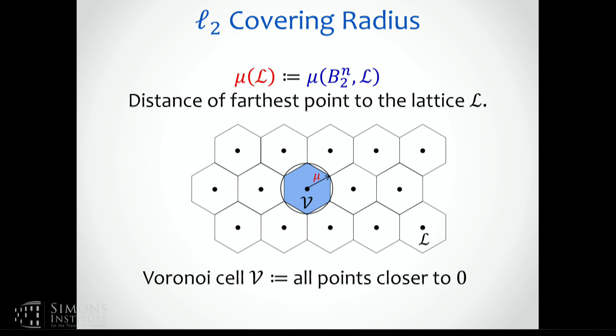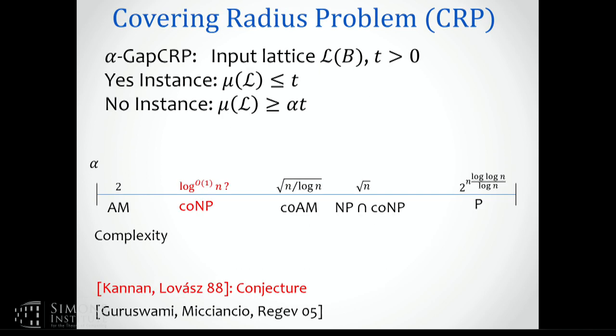Let me briefly discuss the complexity of the computational problem of approximating the covering radius. You are given an approximation factor, a lattice given by its basis, and you either want to decide in a yes-instance whether the covering radius is at most something, or in a no-instance whether the covering radius is at least alpha times that something. About 15 years ago, Guruswami, Daniele, and Oded looked at this problem in detail.